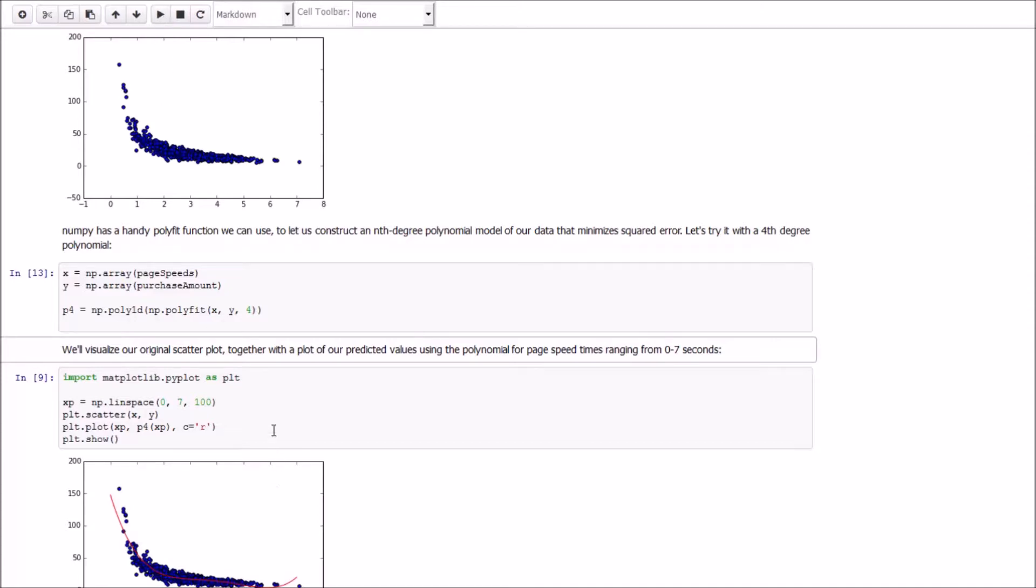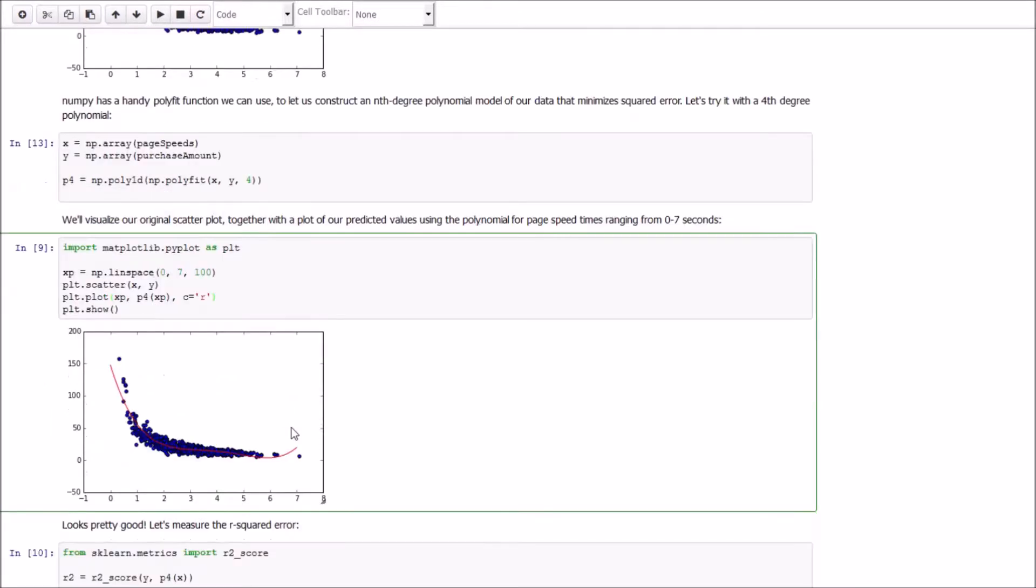It runs pretty quickly and we can then plot that. So we're going to create a little graph here that plots our scatter plot of original points versus our predicted points. And it looks like that.